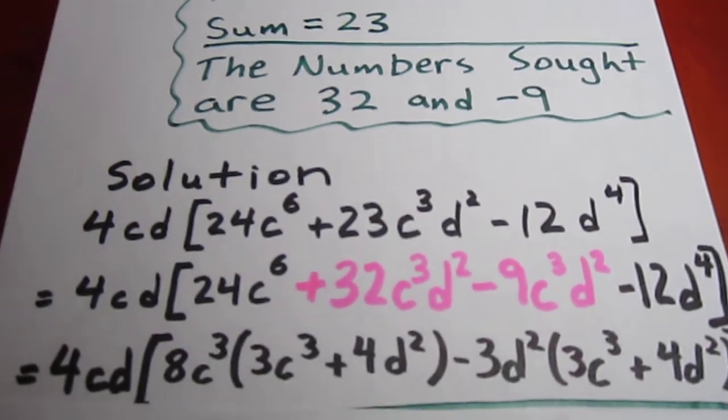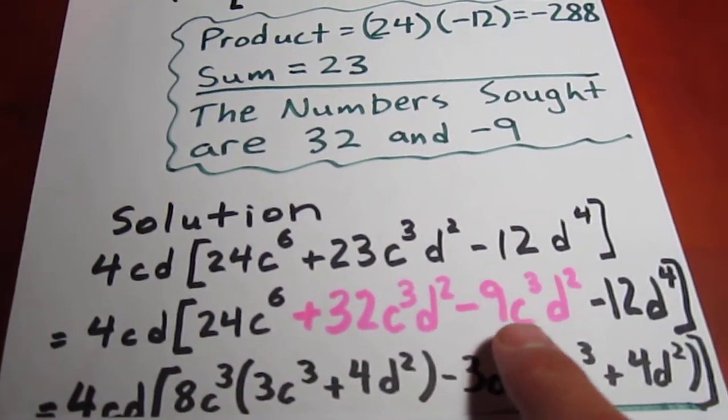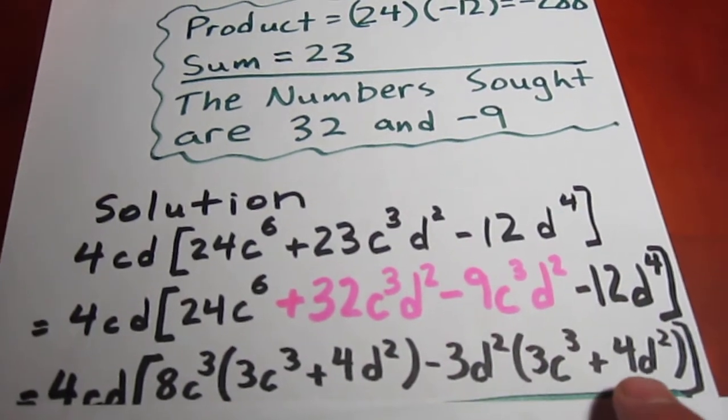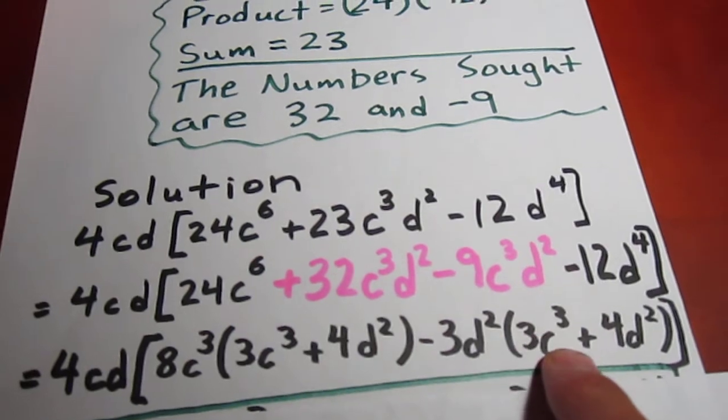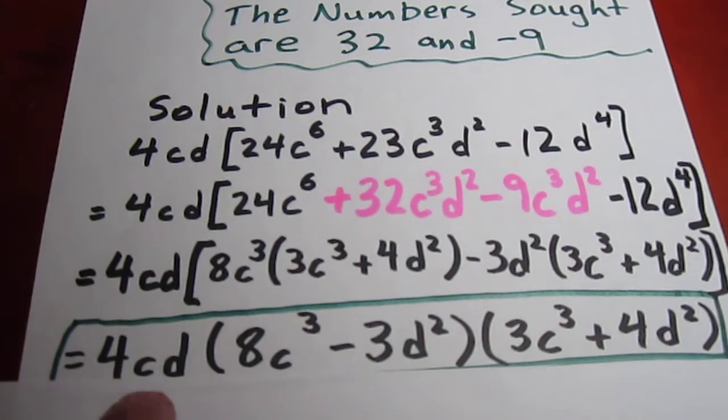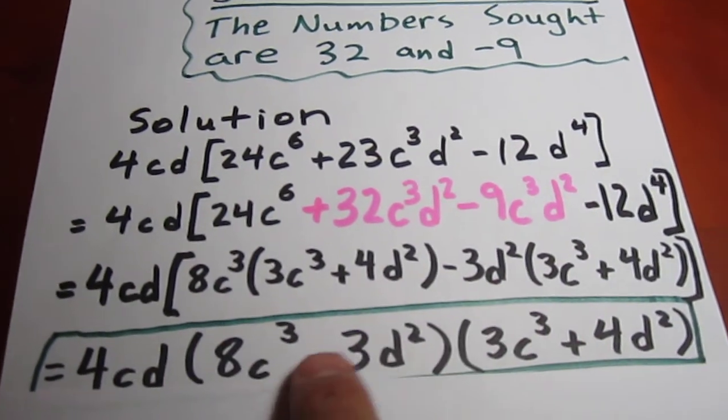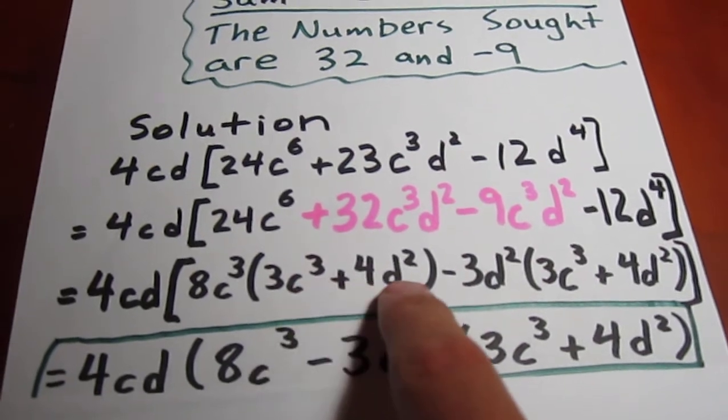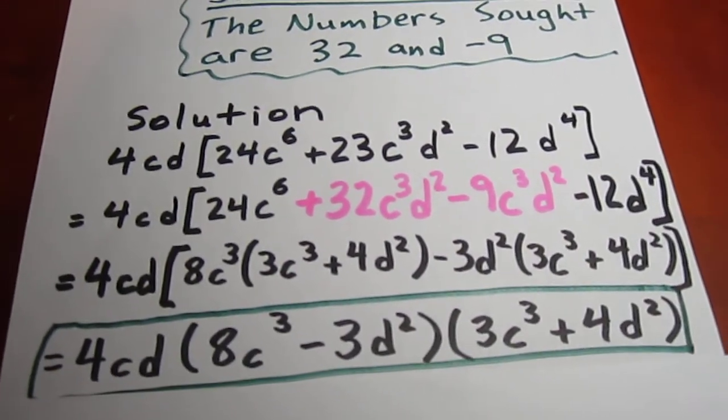We can then common factor out of the first two terms here, common factor out of the last two terms here. And since we have the same binomial twice, we're in good shape. Our final answer becomes this common factor, which has been a passenger for a while, times 8c³ - 3d² times 3c³ + 4d², since that was the common binomial factor in the previous step.